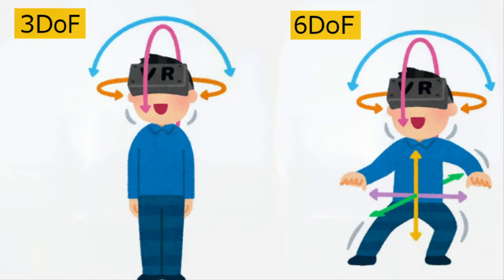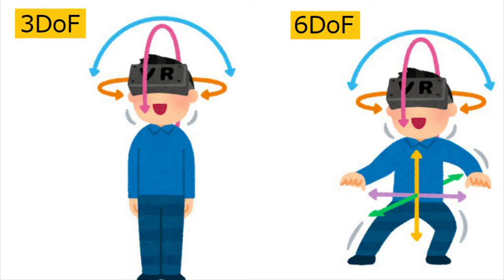Grado de libertad. Nos referimos al grado de libertad en cuanto a movimientos que nos proporciona la realidad virtual en cada caso. El más amplio y actual de los cascos virtuales actuales es el 6DOF, es decir, que podemos movernos en seis direcciones distintas: adelante, atrás, izquierda, derecha, arriba y abajo.